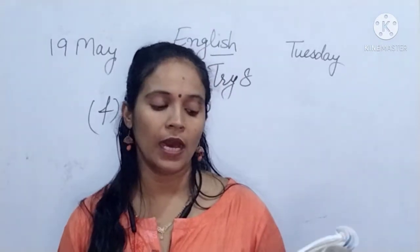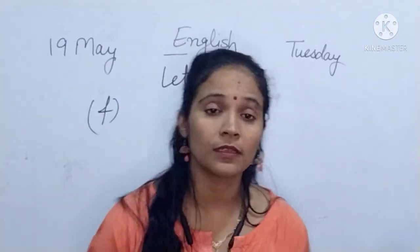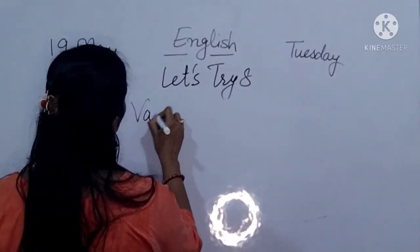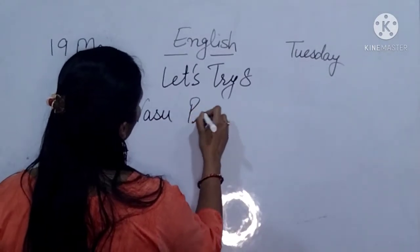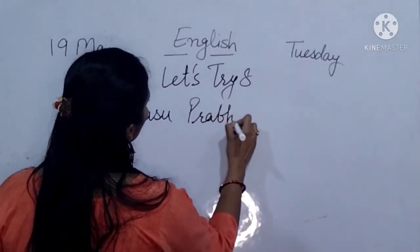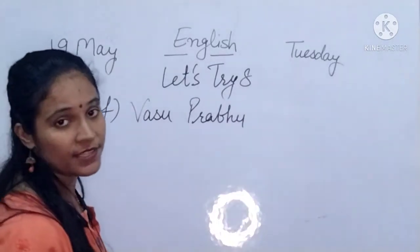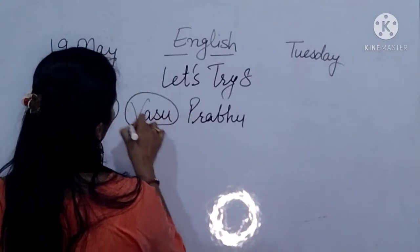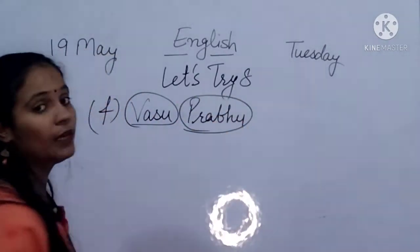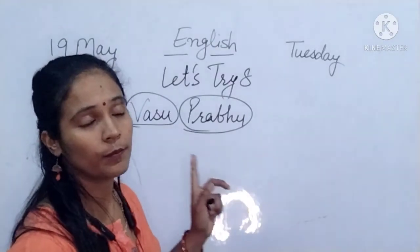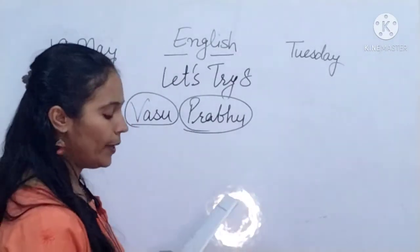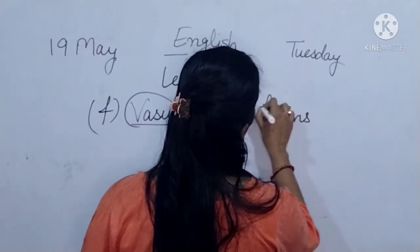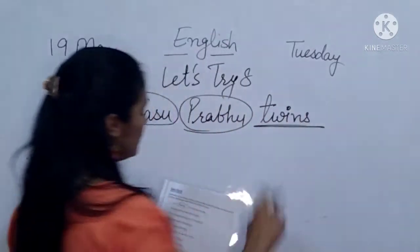Sentence F: Vasu and Prabhu are identical twins. Here are the names of two kids — Vasu and Prabhu. These are specific person names, so they are proper nouns. And the common noun in this sentence is twins — underline it.